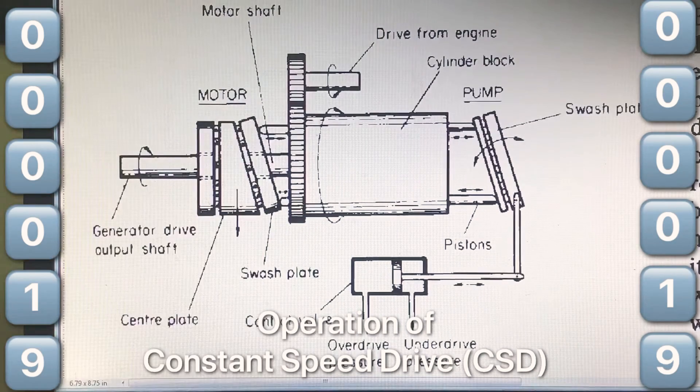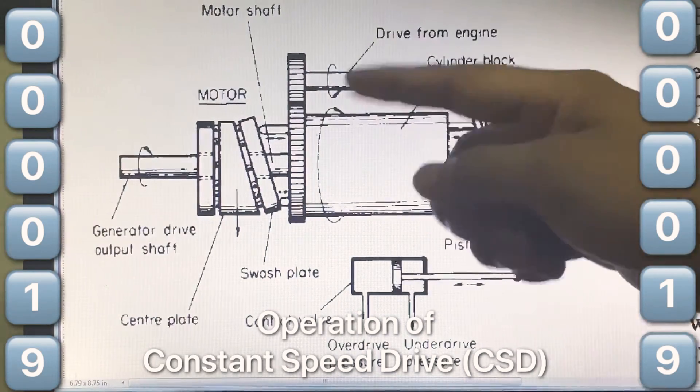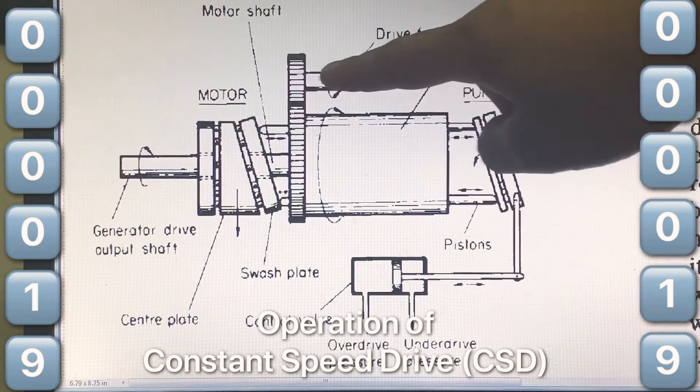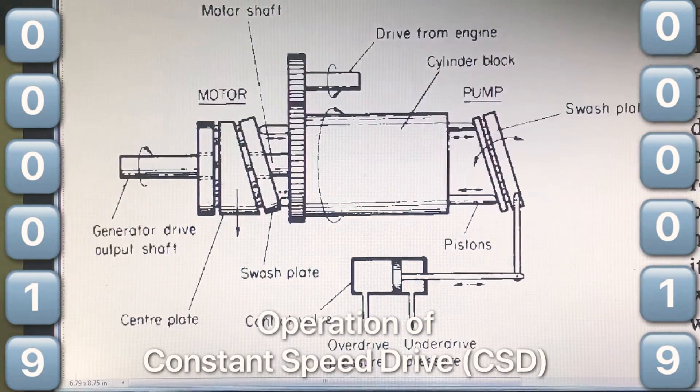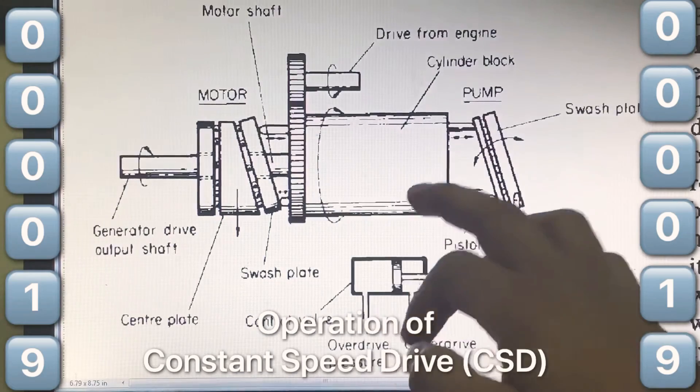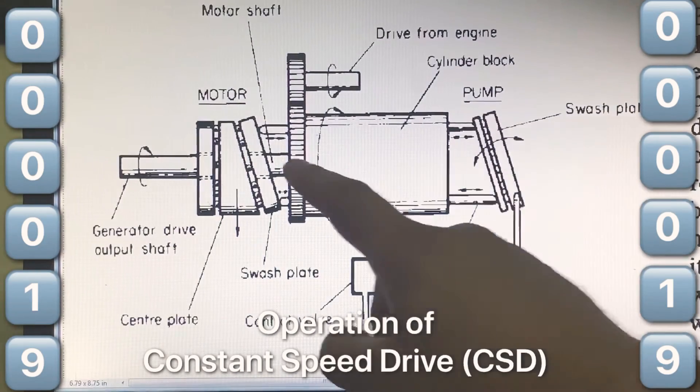It also has a cylinder block which rotates because of the drive given from the engine. This cylinder block is common to this hydraulic pump and hydraulic motor.